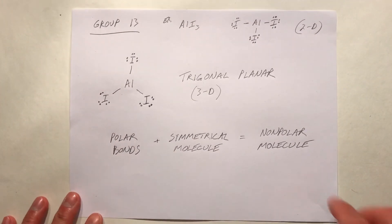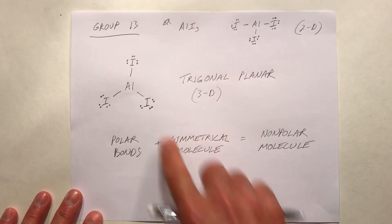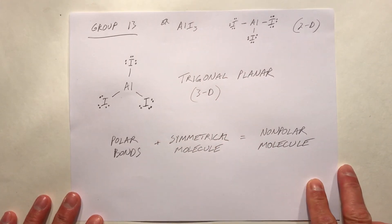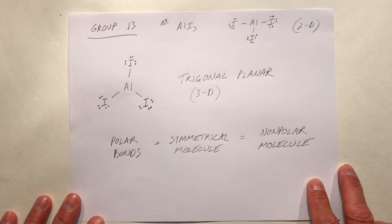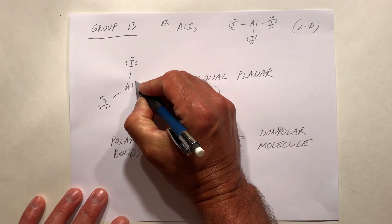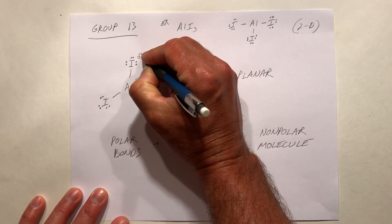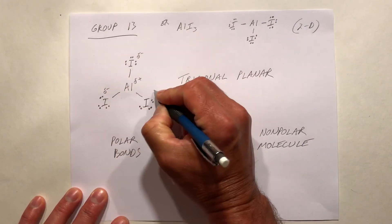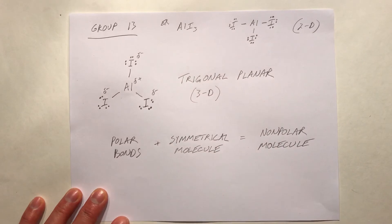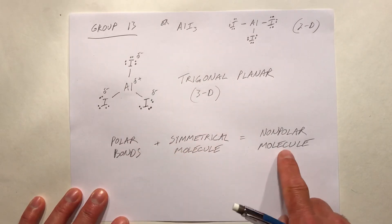For a group 13 element, aluminum bonded to three iodines — we would have polar bonds. The aluminum would be delta plus and the iodines would be delta minus, but that would also be a symmetrical molecule, so it would be a nonpolar molecule.